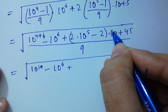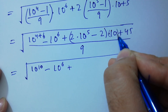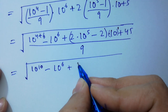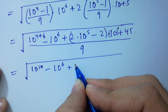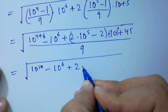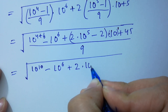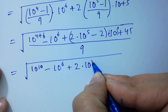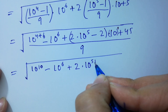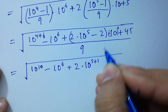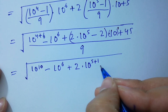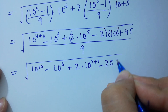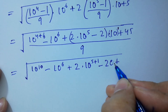And here we have power 5 and here we have power 1, so it will be 2 times 10 to the power 5 plus 1, minus 2 times 10, which gives 20 plus 45.